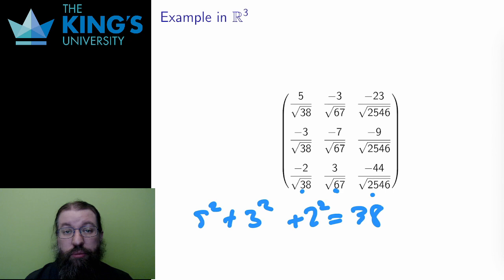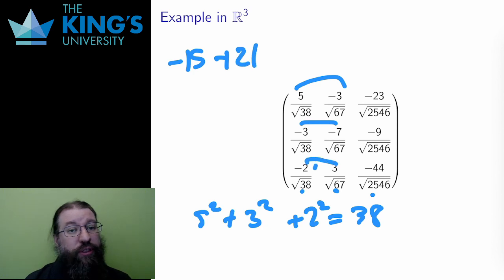Similarly, all of the columns are orthogonal to each other. Let me show this by taking the dot product of the first two. Conveniently, in the dot product, I can actually ignore the denominators, since they are the same for all three entries and thus can be factored out. The dot product of the first two is -5 × 3, which is -15, plus -3 × -7, which is positive 21, plus -2 × 3, which is -6. -15 + 21 - 6 is indeed 0, and feel free to check the other two pairs.